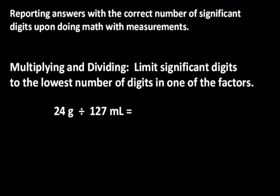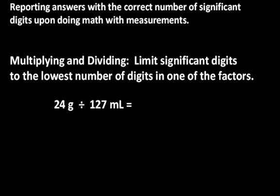Now for multiplying and dividing, the rules are a little bit different. You limit the significant digits in your answer to the lowest number of digits in one of the factors. So in this case, I've measured a mass and a volume, so I'm calculating a density here, which would be 24 divided by 127.